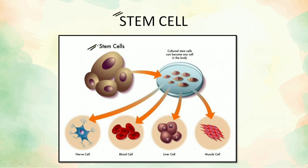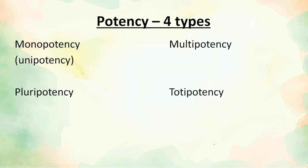When a stem cell is cultured, it can get converted into various types of cells — like nerve cells, blood cells, liver cells, or muscle cells — depending on the conditions required or the various possibilities for that particular cell.